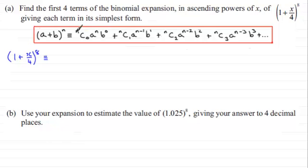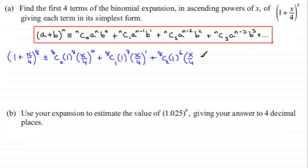So, using this, we're going to have 8c0, and then we've got a to the power n, so that'll be 1 to the power 8. Now, I know that's 1, but I just want to put this in just to demonstrate the pattern. And then we've got b to the power 0, that's x over 4 all to the power 0. So that's our first term. Next term is 8c1, and then we drop the power on the 1 by 1, so that's 1 to the power 7, and we increase the power by 1 on the b term.